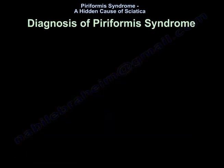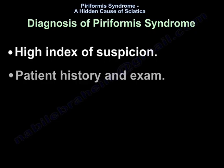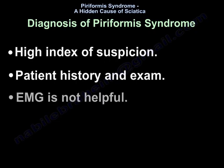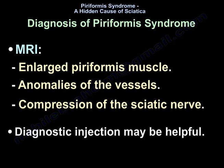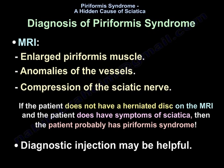Diagnosis of piriformis syndrome requires a high index of suspicion, along with patient history and exam. EMG is not helpful. On MRI, you may find an enlarged piriformis muscle, anomalies of the vessels, or compression of the sciatic nerve. Diagnostic injection may be helpful. If the patient does not have a herniated disc on MRI but has symptoms of sciatica, then the patient probably has piriformis syndrome.